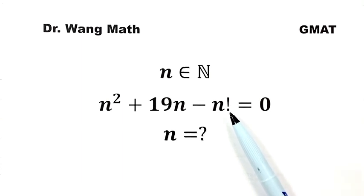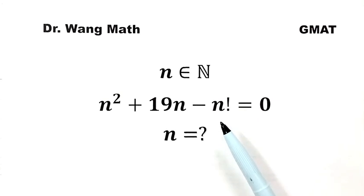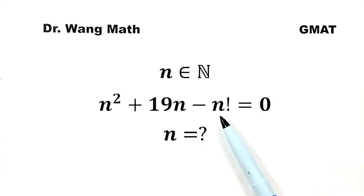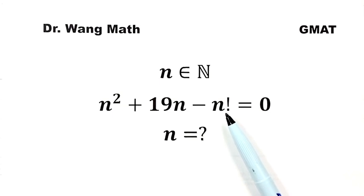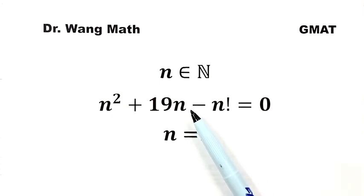There's no general solution to solve this. Our strategy is using the basic properties of a natural number n and its factorial to narrow down the potential solutions for n, then find the exact solutions. Now let's get started.